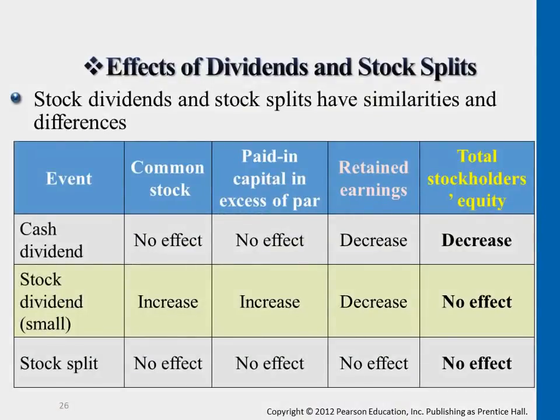If we compare all these topics that we talked about so far — cash dividends, stock dividends, stock split — the upper part is the account names. You see common stock account, paid capital in excess of par, retained earnings, and then the total equity value.